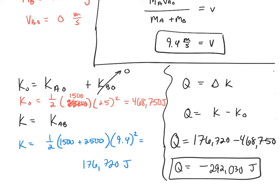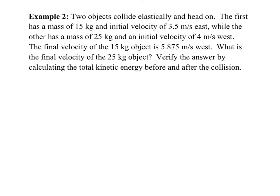Now moving to example two. Two objects collide elastically and head on. The first has a mass of 15 kg and a velocity of 3.5 m/s east initially, while the other has a mass of 25 kg and an initial velocity of 4 m/s west. Direction matters a lot here. The goal is to find the final velocity of the larger object given that the final velocity of the smaller object is 5.875 m/s, and to verify by calculating total kinetic energy before and after.